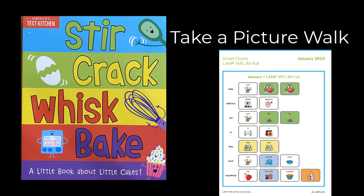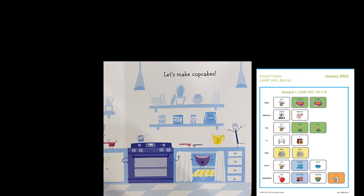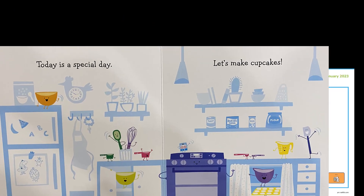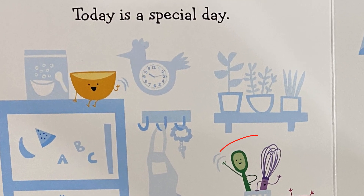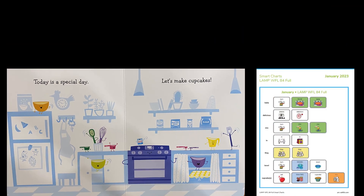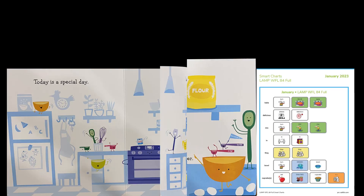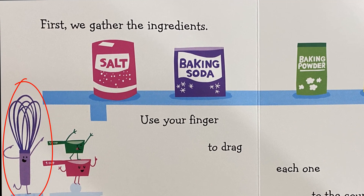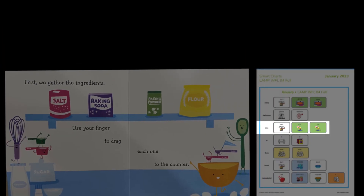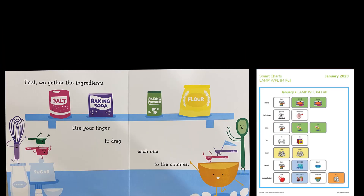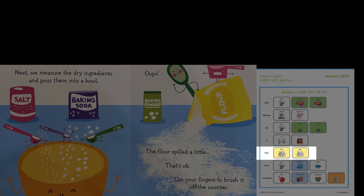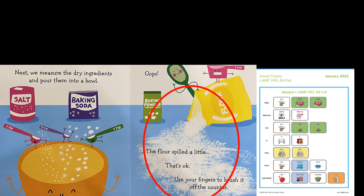Let's take a picture walk to learn more. It looks like we're in the kitchen. I see a bowl up on the shelf and a spoon and a whisk for stirring. What do you see? I think they're going to bake something. There's a whisk — we use that to mix ingredients. They are putting a lot of stuff in the bowl. What do you think happened here? Let's read the book and find out what they're baking.